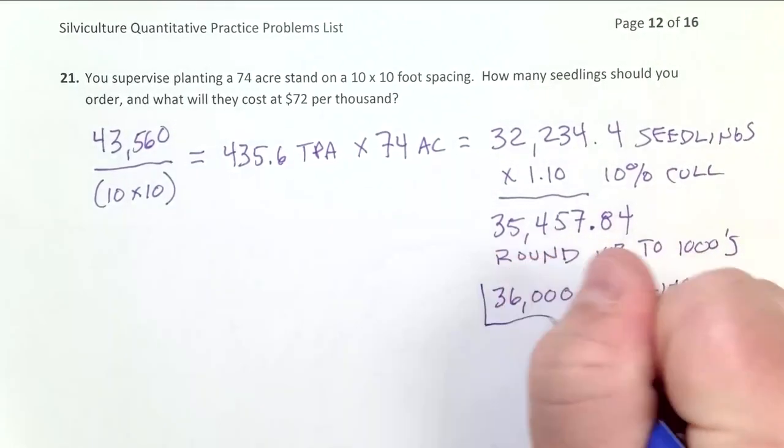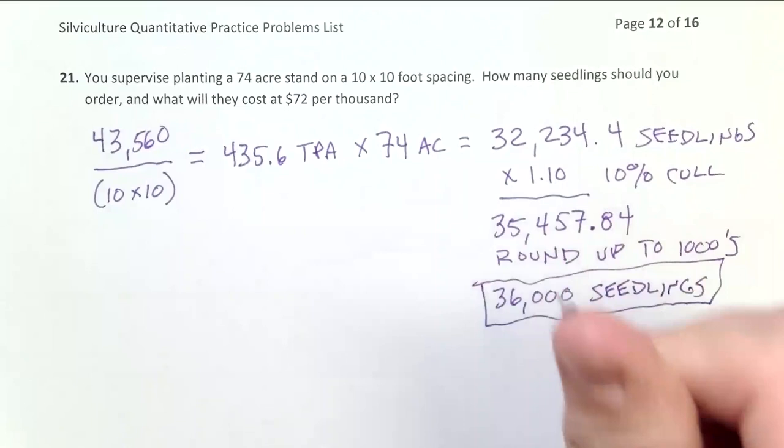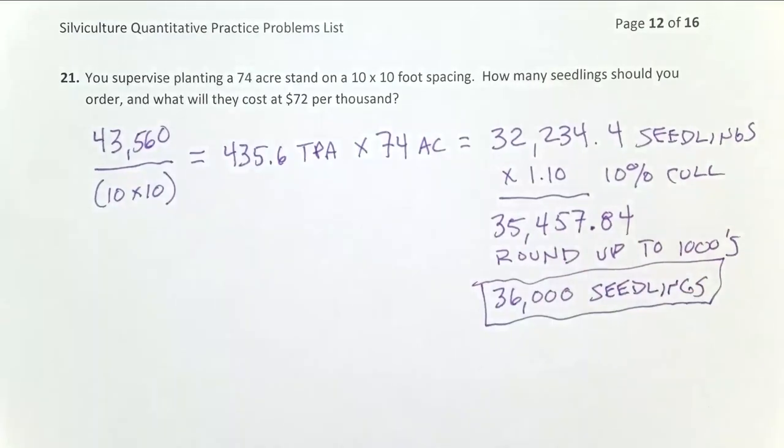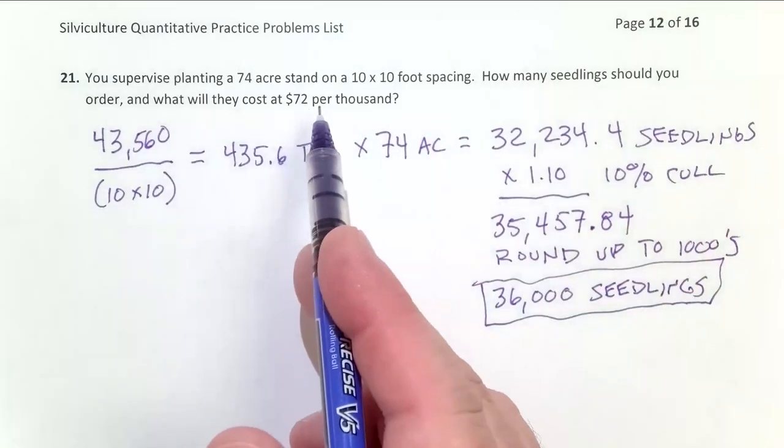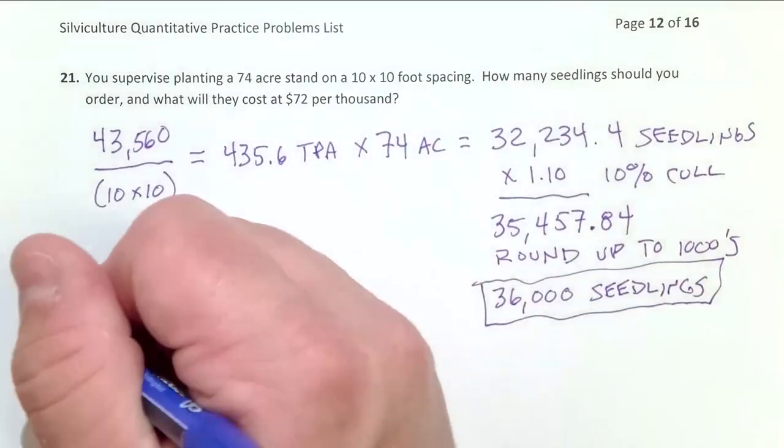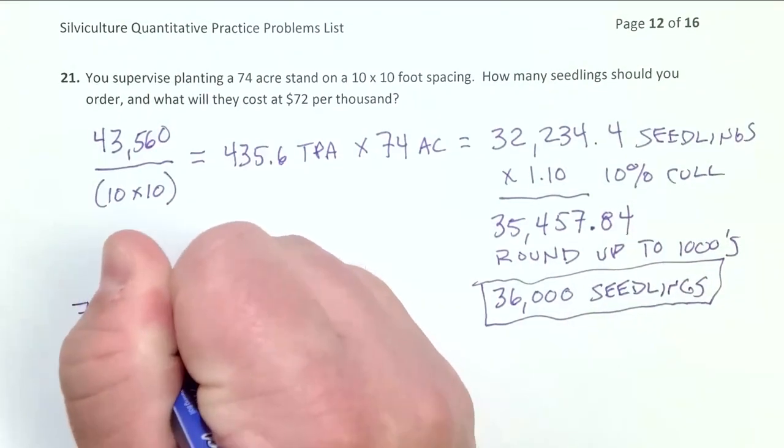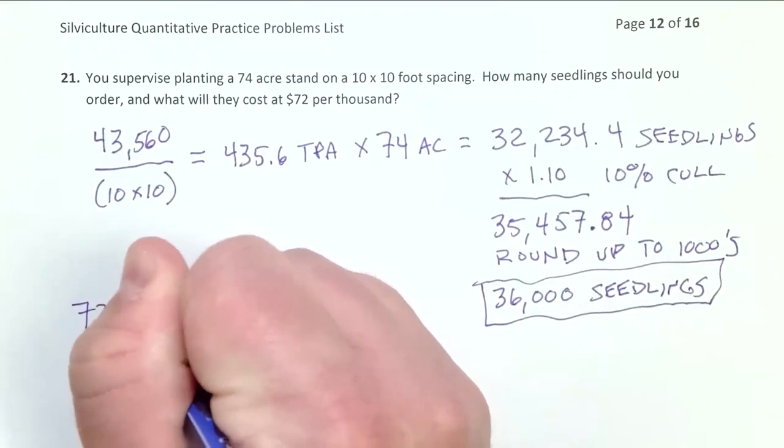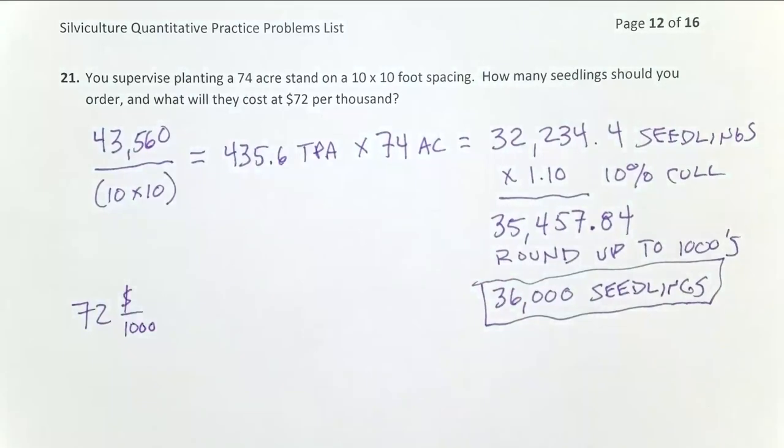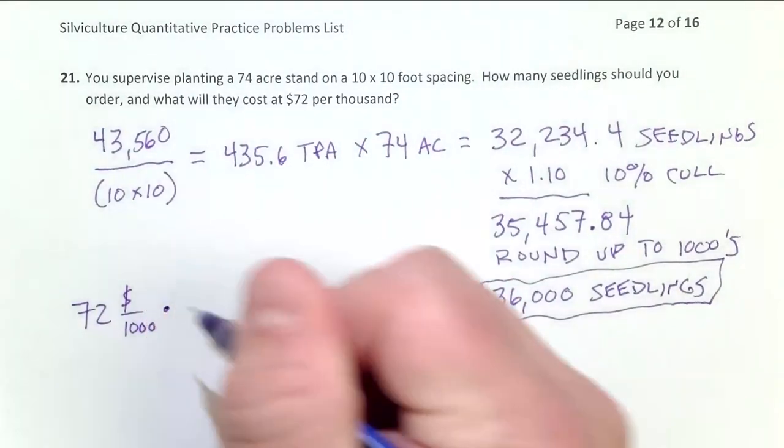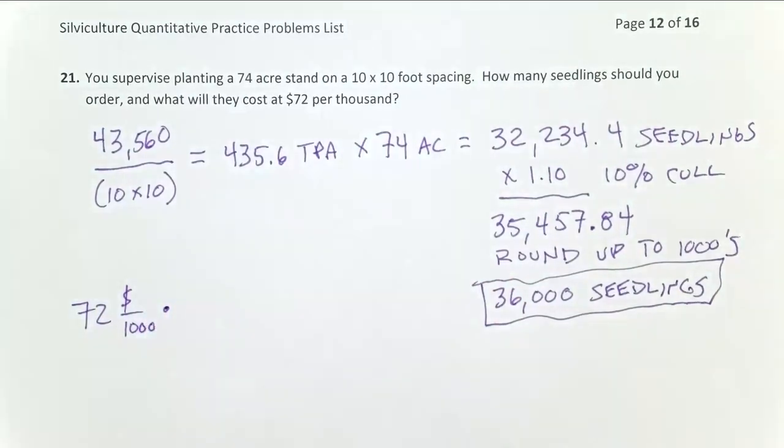So now we know how many we're going to order. Next, we need to figure out the cost of these seedlings. Well, they cost $72 per 1,000 seedlings. Let me do that. So I'll just write it like this. $72 per 1,000. And now what I need to do is multiply that by my 36,000 seedlings.